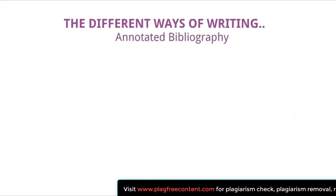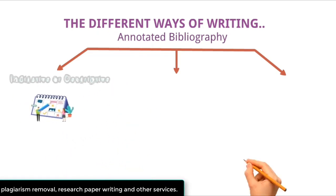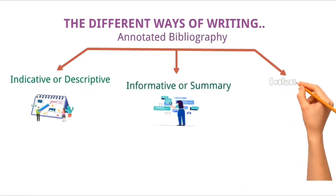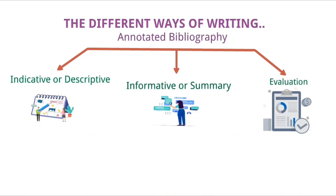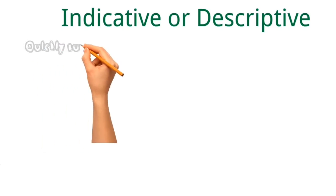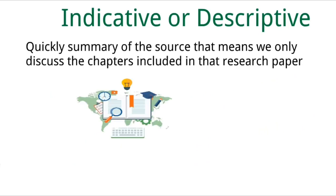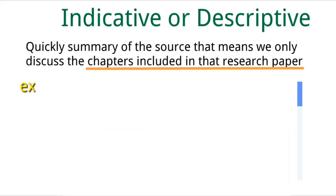Next I will guide you about the different ways of writing annotated bibliography. There are three different ways: first is indicative or descriptive annotation; second is informative or summary annotation; and third is evaluation annotation. Let's start with the first — indicative or descriptive annotation. In this style we give a quick summary of the source, meaning we only discuss what the research paper is about and what chapters are included. An example is mentioned on screen.